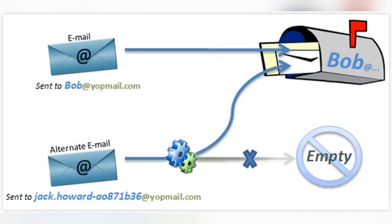But if you want some privacy, especially if you are emailing another person, then you might not like the idea of anyone with your email address being able to see what's in your inbox. Instead of passwords, the way WyoPmail provides privacy and security for their disposable email accounts is using alternate addresses, also called email aliases. In this WyoPmail tutorial, we'll go over how to use a WyoPmail email alias to add security to your temporary account.